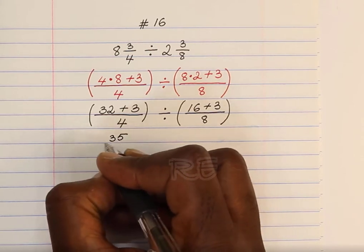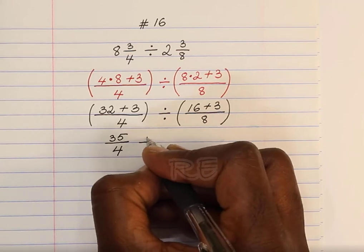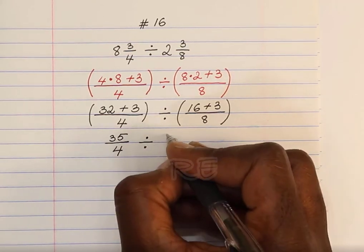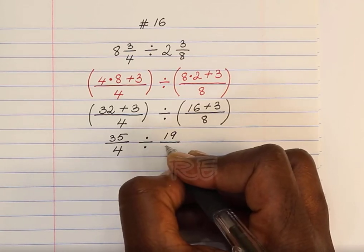Which will give us 35 over 4, divided by 19 over 8.